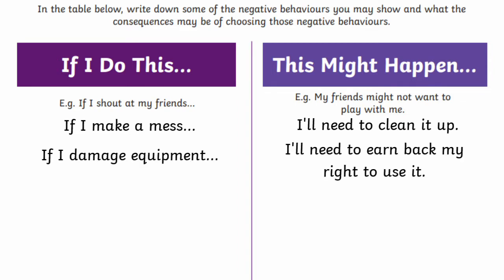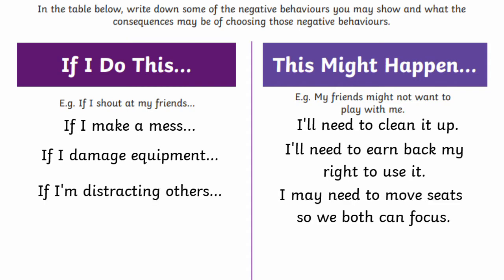Or if they've been acting disrespectfully towards classroom equipment, a logical consequence would be for them to lose their privileges to that equipment — maybe for the rest of the day or until they can earn it back. If you've asked for their attention but they won't stop talking to the person next to them, a relevant consequence may be to move them somewhere else. If you give them an unrelated consequence like a time out, they may not make the connection between their actions and the result, and you've missed out on a learning opportunity.